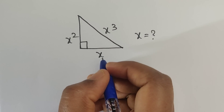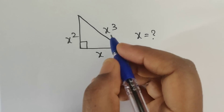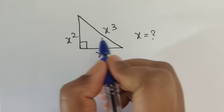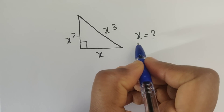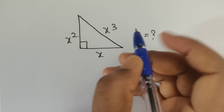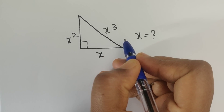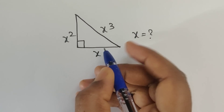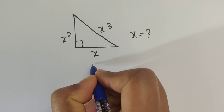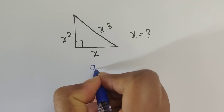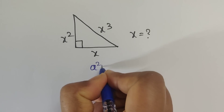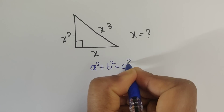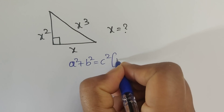Hello everyone, welcome back to our channel. Here we have one right triangle, and in this problem we have to find the value of x. To find the value of x, we use the Pythagorean theorem. The formula of the Pythagorean theorem is: a squared plus b squared equals c squared.